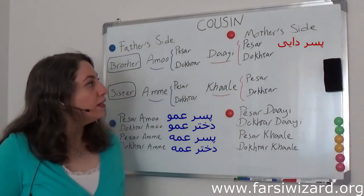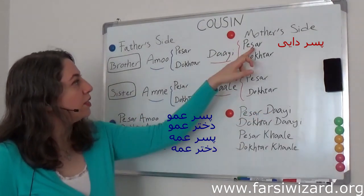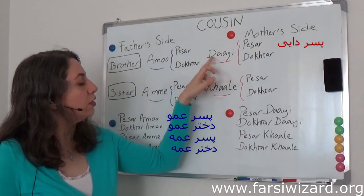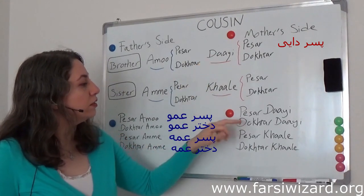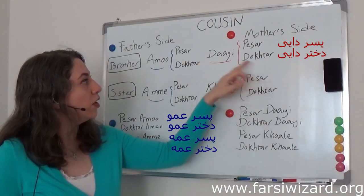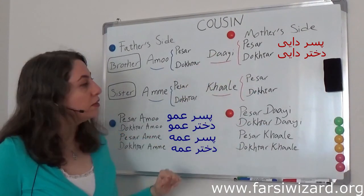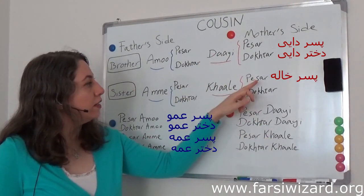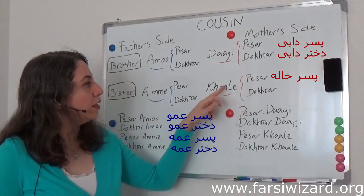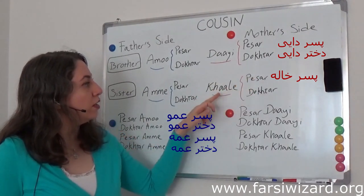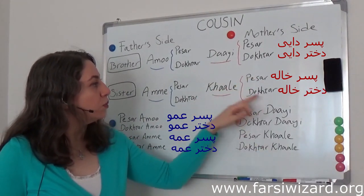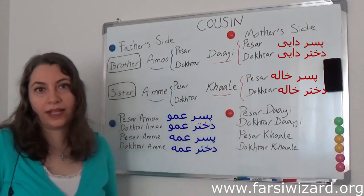'Pesar da'i' is son of maternal uncle, 'dokhtar da'i' is daughter of maternal uncle, 'pesar khala' is son of maternal aunt, and 'dokhtar khala' is daughter of maternal aunt.